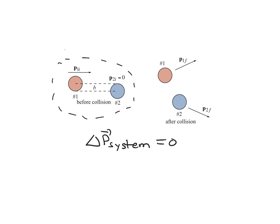We're going to assume that this is an elastic collision. By definition of an elastic collision, the total kinetic energy of the system will not change. Those are going to be the governing principles in play here, and we're going to use what we know about conservation of momentum and energy, and also Newton's second law, to predict which direction the balls are going to go off in.